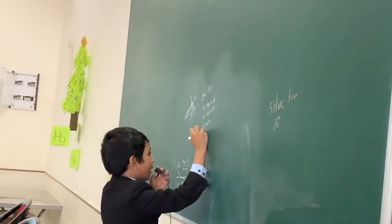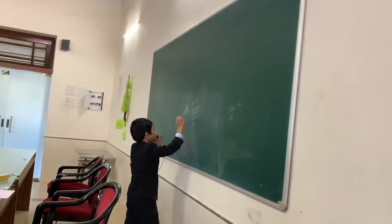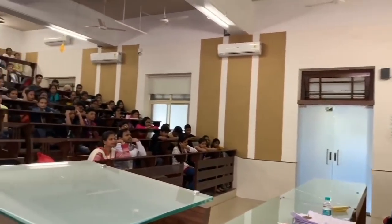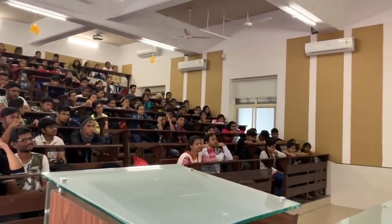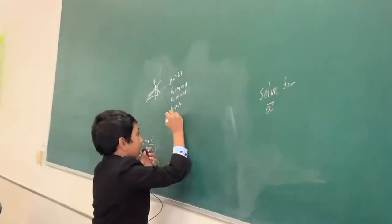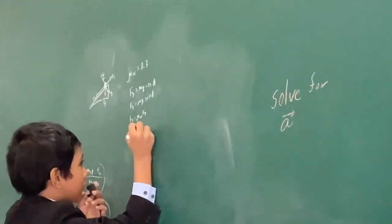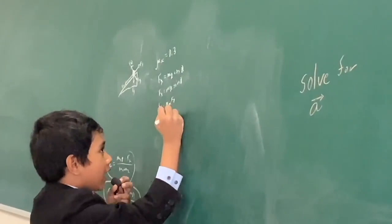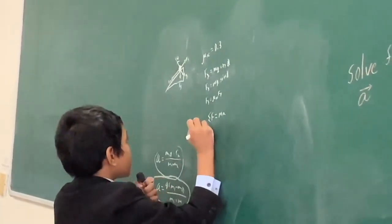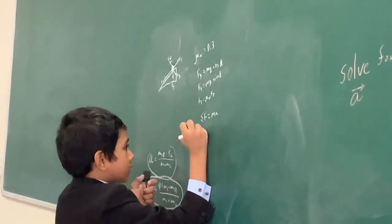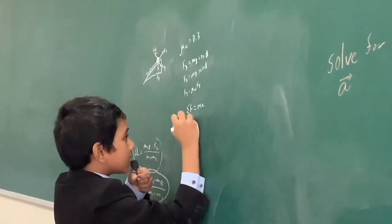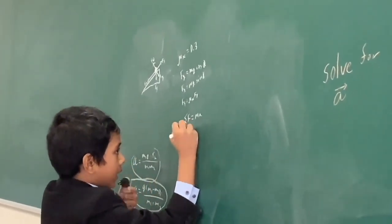What can we make an equation for? What is Newton's second law? Can somebody tell me? F equals MA. You told us that the net force equals F equals MA. So, now, what are the net forces? We have F of F and we also have FG parallel. And so, now, that's all equal to MA.